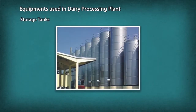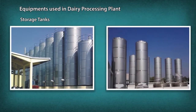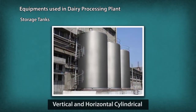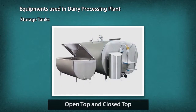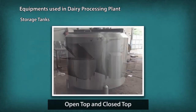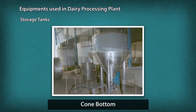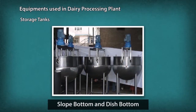Storage Tanks are containers that hold hot or cold liquids used for short or long-term storage. In a dairy industry, the storage tanks are classified based on structure and heat preservation capacity. Storage tanks are available in many shapes, for example, vertical and horizontal cylindrical, open top and closed top, flat bottom, cone bottom, slope bottom and dish bottom.